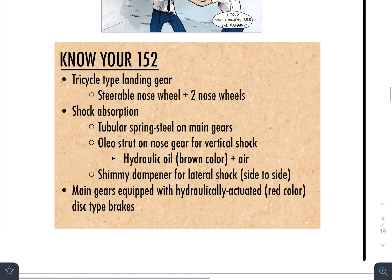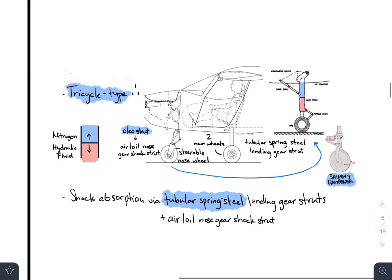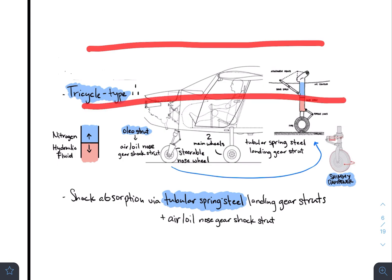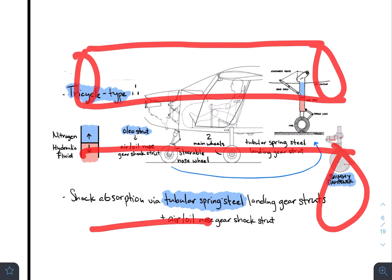So, as far as shock absorption is concerned, the main gears themselves have what is called tubular spring steel. And we're talking about this one area over here. Now, why we say tubular spring steel is that if we were going to compare two things, right? One tube, which is going to be hollow, and another tube, which is going to be like solid metal.